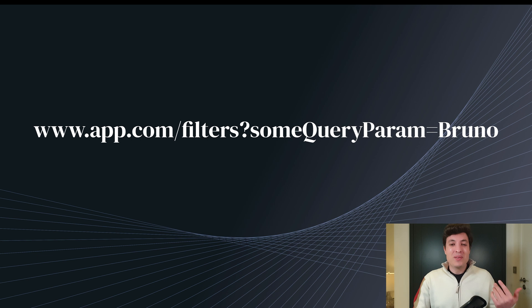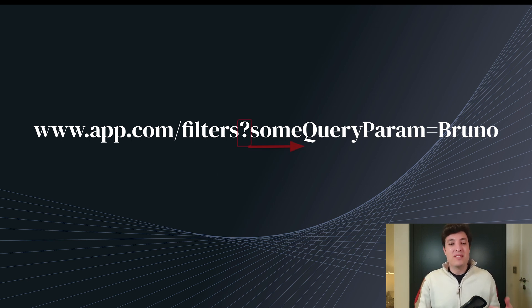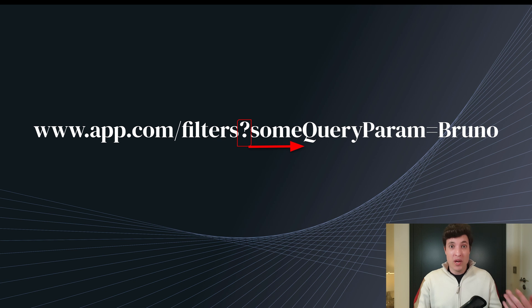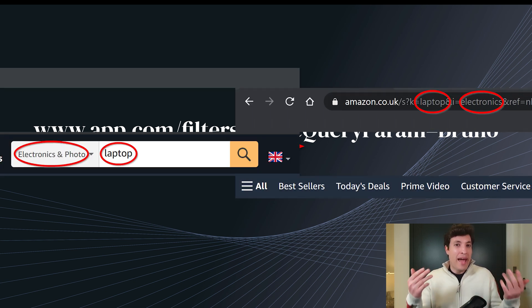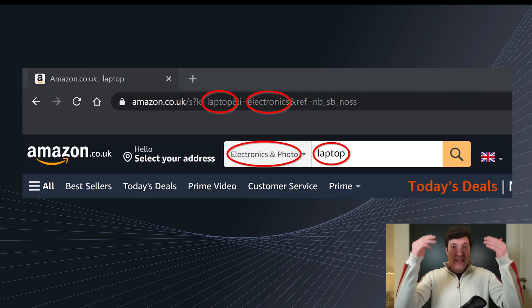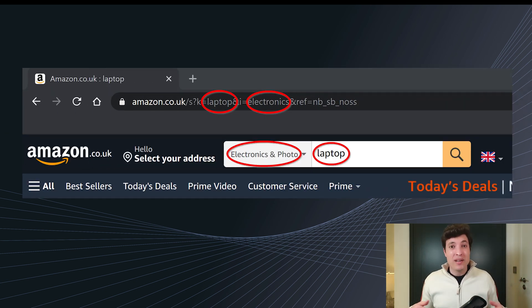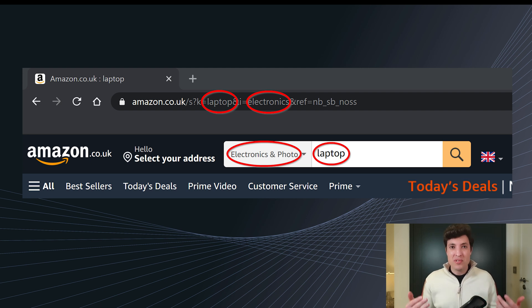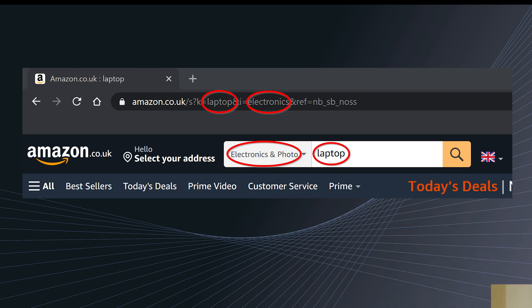So what do we mean by query parameters? Query parameters is everything that we have after that question mark. Applications like Amazon, in their product page where we are doing our filters, use that quite a lot.